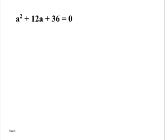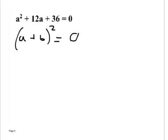Write this down. We have a² + 12a + 36 = 0. This is a perfect square trinomial: a² is a perfect square, 36 is a perfect square, and 12 equals 2 times the square root of a² times the square root of 36, which is 2 times 6. So we write (a + 6)² = 0, giving a + 6 = 0, so a = -6.